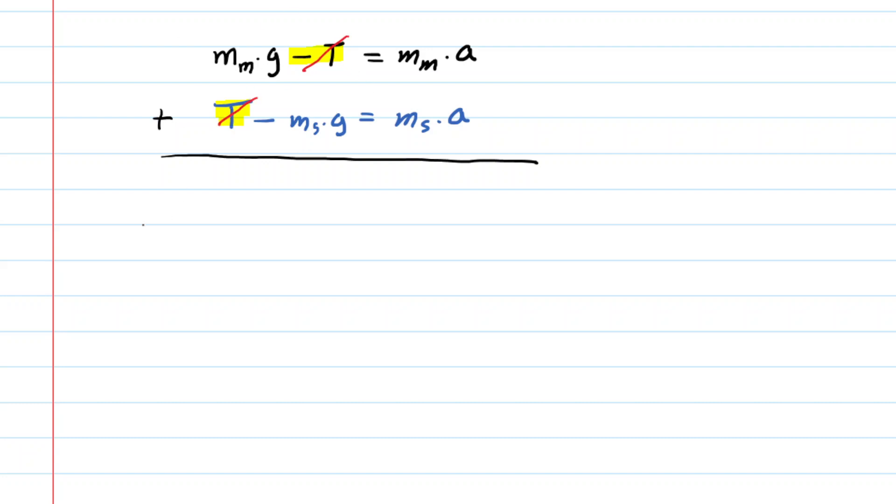And then on the left-hand side, what we are left with is the mass of the man times g minus the mass of the sandbag times g. Notice it's a minus because of the minus sign we had previously put into the equation. And then on the right-hand side, we're going to have the mass of the man times the acceleration plus the mass of the sandbag times the acceleration.